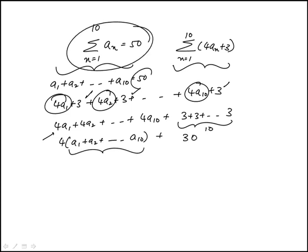This is what exactly we're given, that's 50. So it becomes 4 times 50 plus 30. So that's 200 plus 30 is 230.